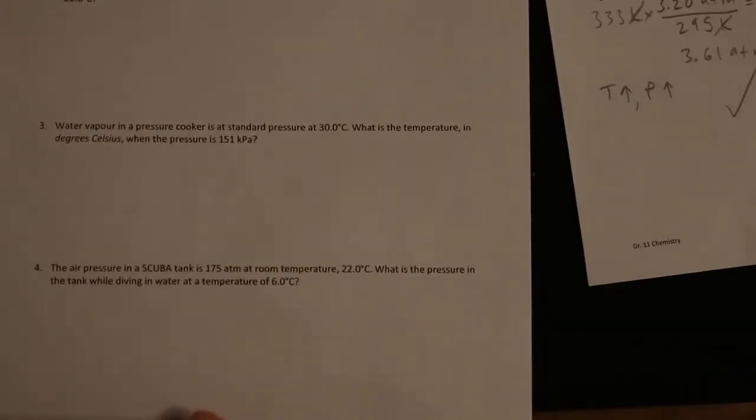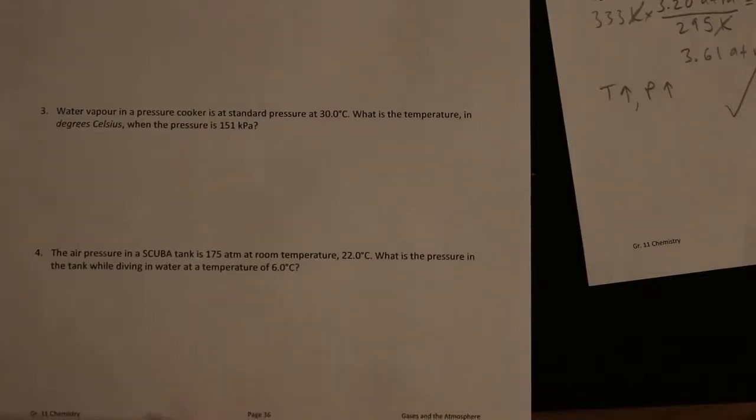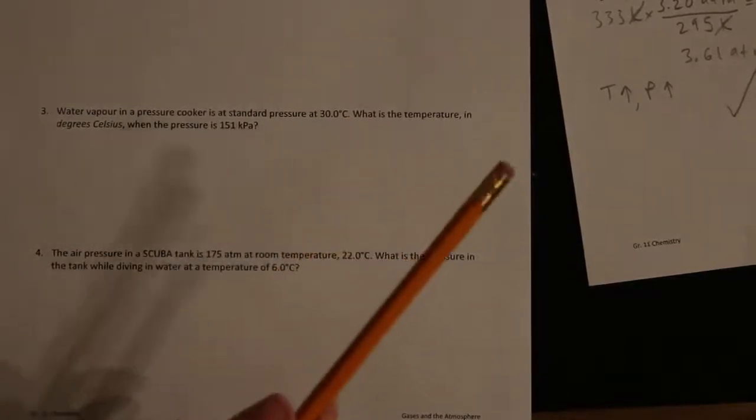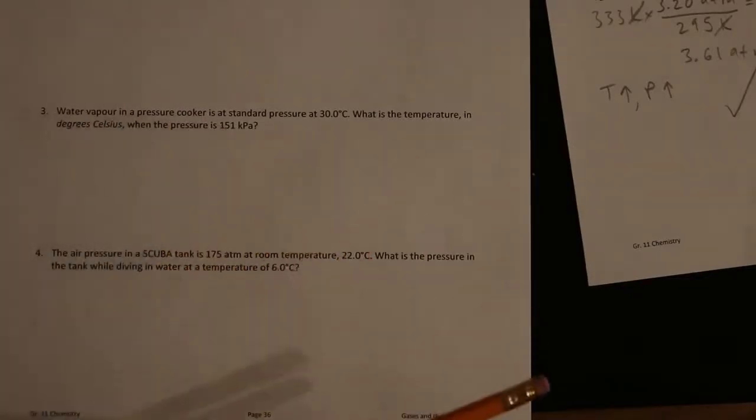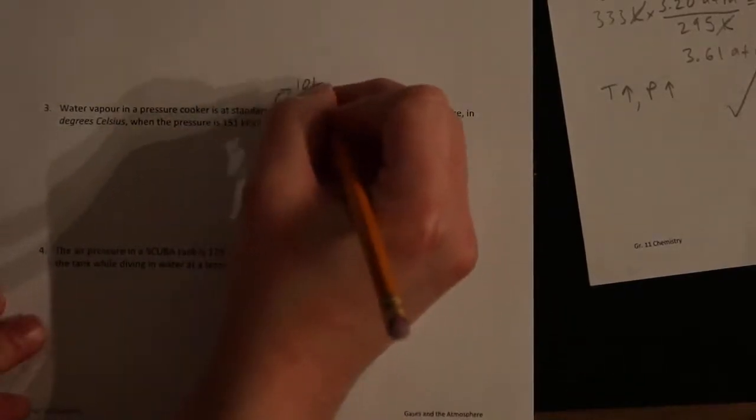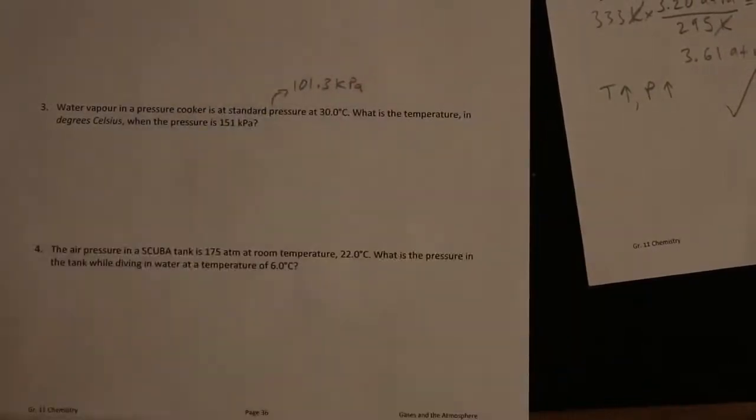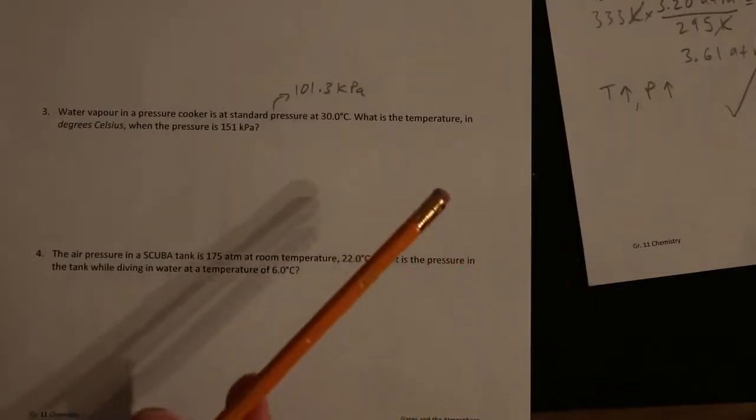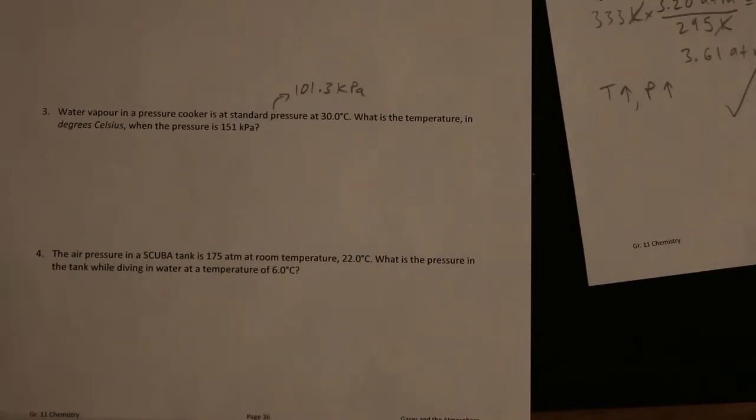I'm going to skip to question number 3 to see if that one will allow us to find a temperature this time. It says water vapor in a pressure cooker is at standard pressure at 30 degrees Celsius. What is the temperature in degrees Celsius when the pressure is 151 kilopascals? With this one they didn't actually tell us what the initial pressure was. It just told us it was standard pressure. In a case like this, you can look in the book or Google it. Standard pressure is 101.3 kilopascals.